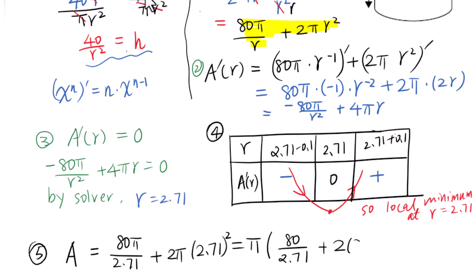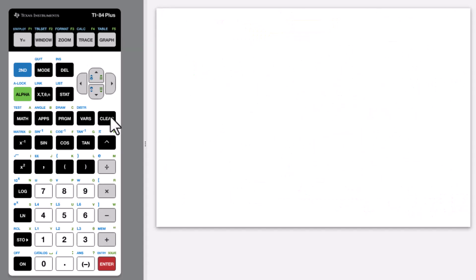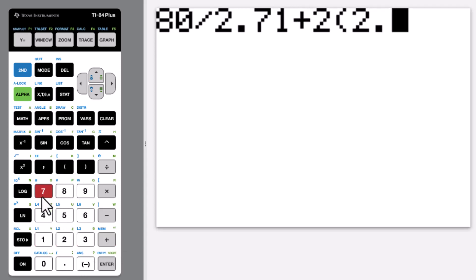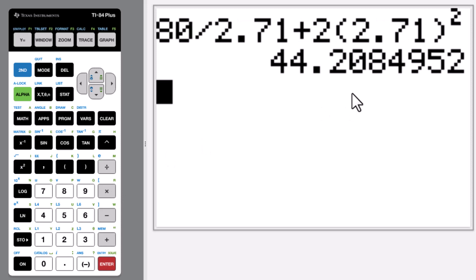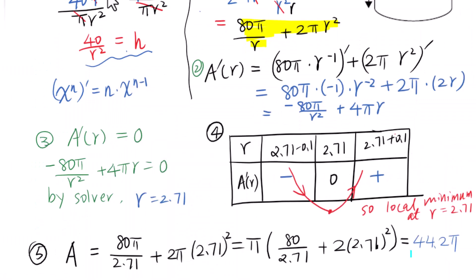We will take π out first: 80/2.71 plus 2 times 2.71². Go to calculator: 80 divided by 2.71, then plus 2 times 2.71 squared, enter. Answer is 44.2π. Don't forget π. So the minimum surface area of this cylinder is 44.2π cm².